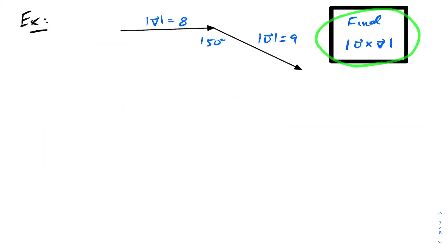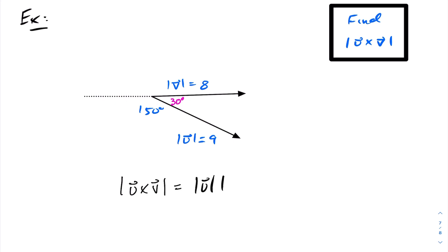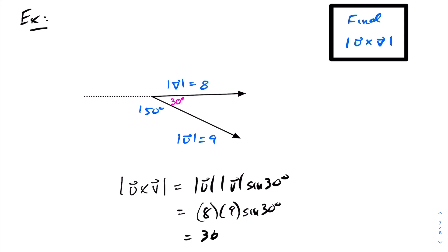For the next example, we want to find the magnitude of u cross v. The vectors are not arranged tail to tail, so we must rearrange them. Arranging the vectors tail to tail, the angle between them is 30 degrees. Therefore, the magnitude of u cross v equals the magnitude of u times the magnitude of v times the sine of the angle between them — which is 8 times 9 times sine of 30 degrees — giving us 36.